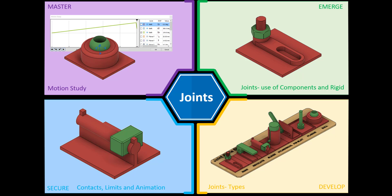Hi and welcome to this Fusion 360 tutorial. Today we're going to look at joints — specifically how to create contacts within joints, how to add a limit, and also how to animate the joints as well. If you'd like a copy of the completed model, please check the link in the description below. If you're interested in the previous videos, please check those out where we looked at how to create joints and the different types of joints.